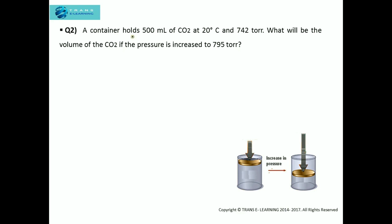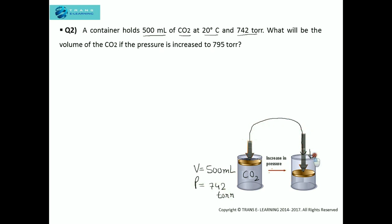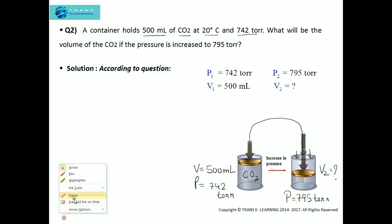Now let's see the second question. First, we read the question properly to analyze what is given and what needs to be found. A container holds 500 ml of carbon dioxide at 20 degrees Celsius at 742 torr. What will be the volume of carbon dioxide if the pressure is increased to 795 torr? We analyze: pressure one is 742 torr, volume one is 500 ml, and the new increased pressure is 795 torr, and we need to find the corresponding volume.